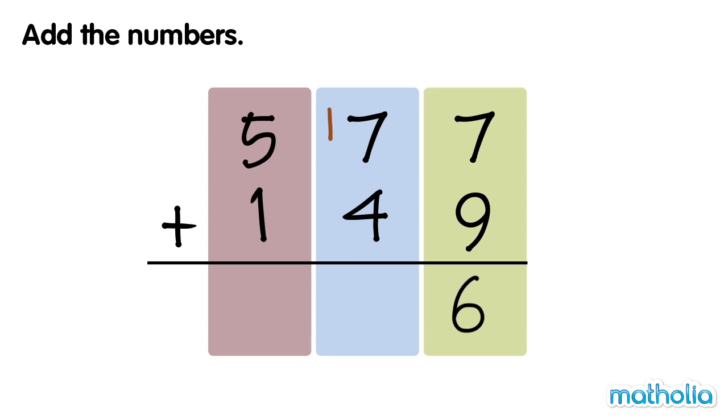We can regroup the 12 tens into 2 tens and 1 hundred. Now we add the hundreds. 1 hundred plus 5 hundreds plus 1 hundred equals 7 hundreds.